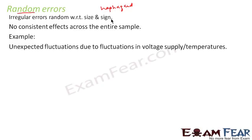Quick review: systematic errors are organized errors that shift the result in one direction. Random errors are irregular errors with respect to size and sign.